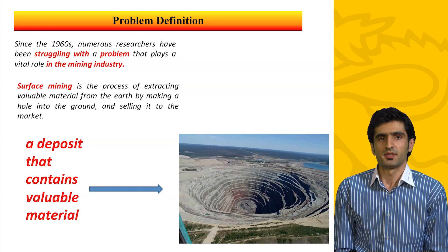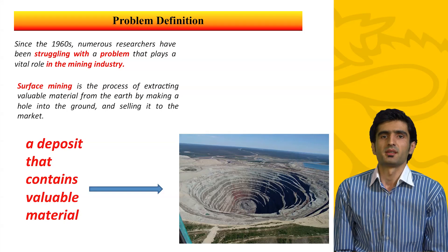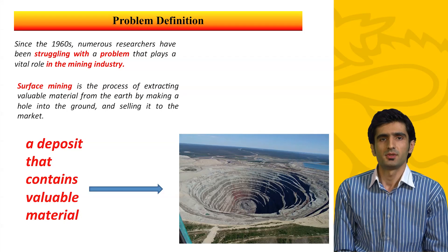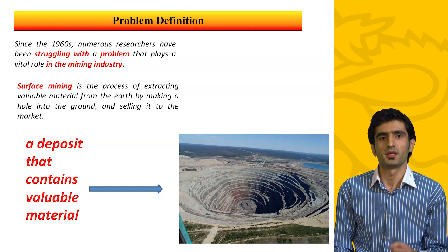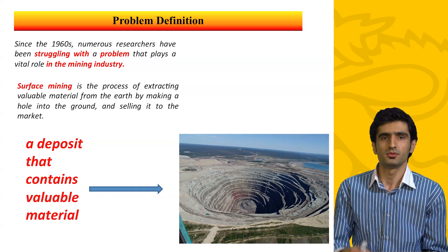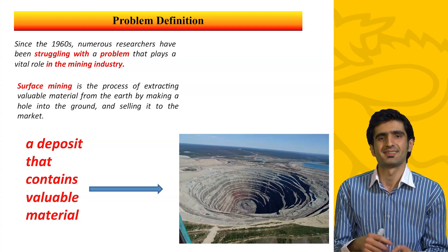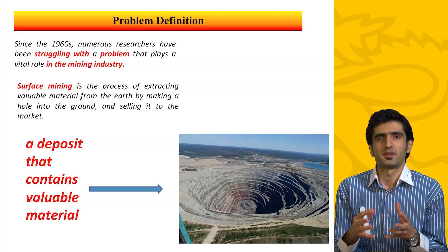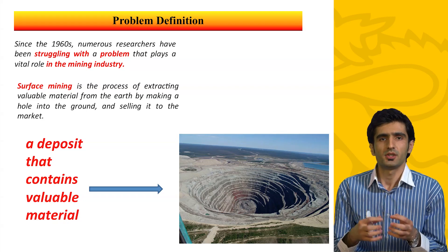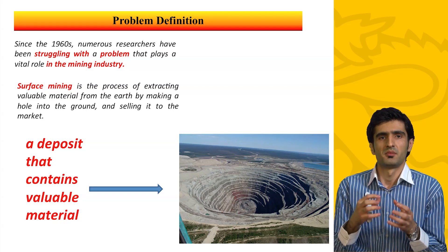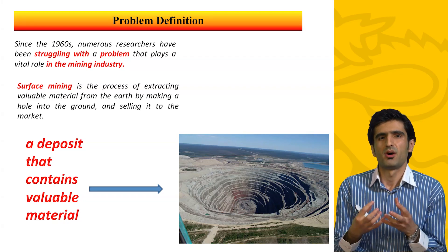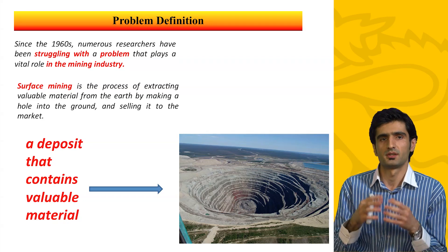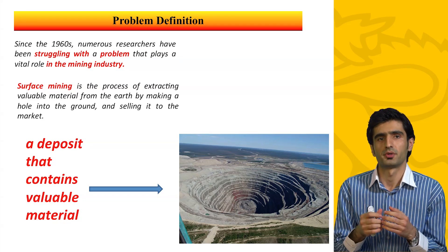In general, surface mining is the process of extracting valuable material from the earth by making a hole into the ground and then selling it to the market. The area of the earth that contains valuable material is typically called a deposit. The photo in the corner shows a deposit in California.